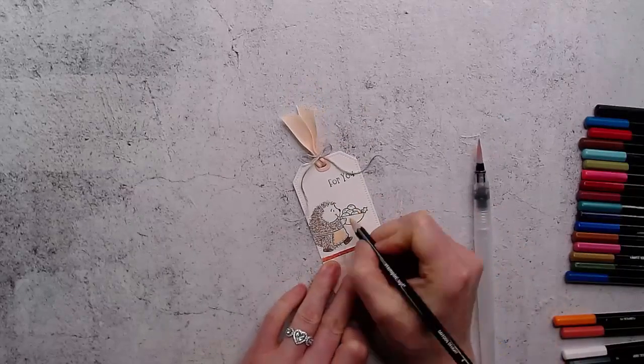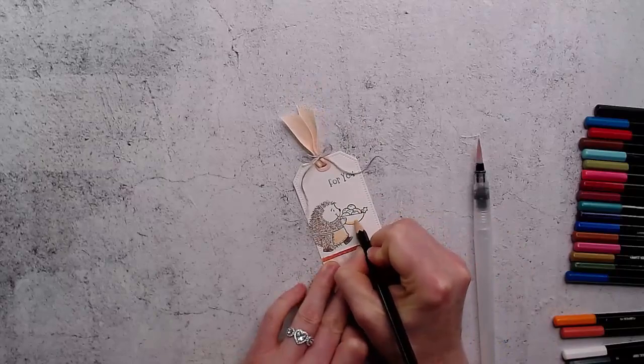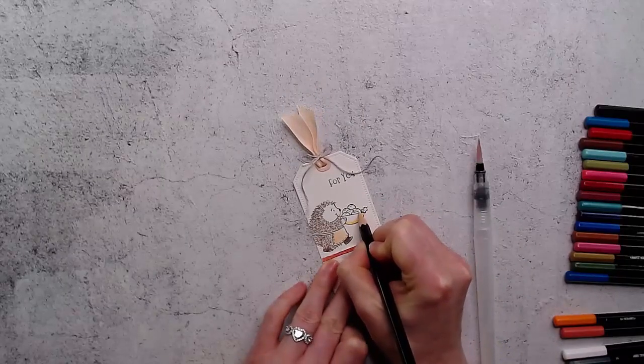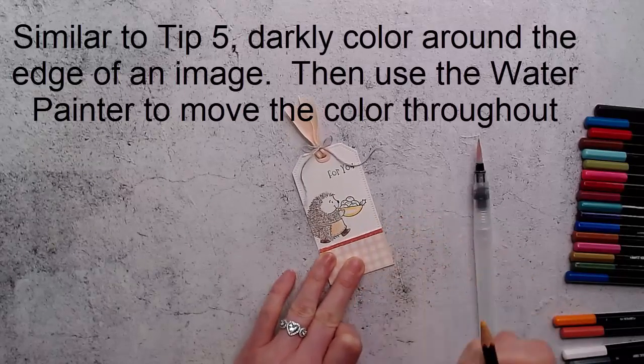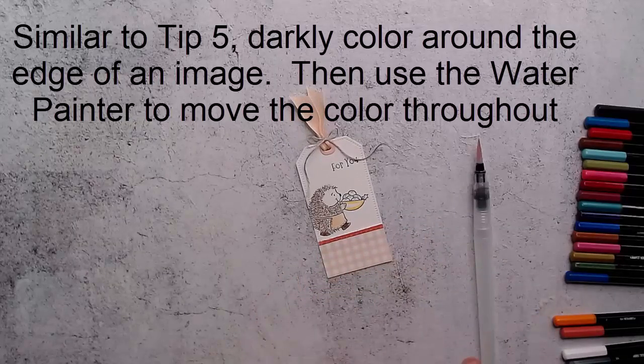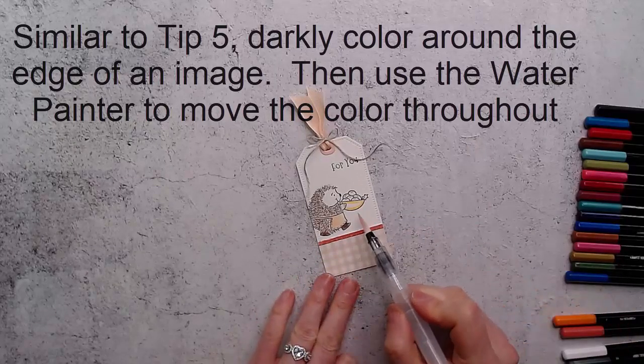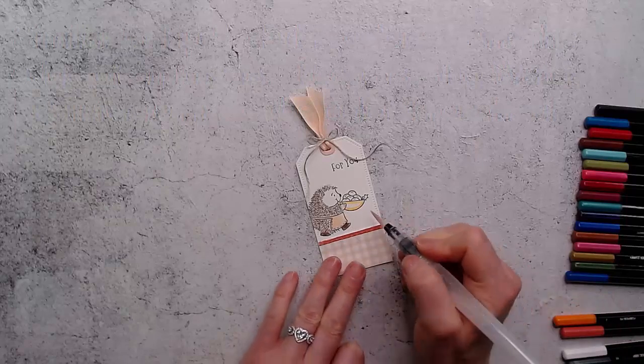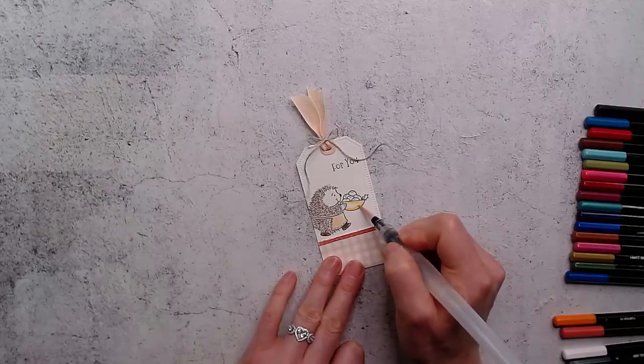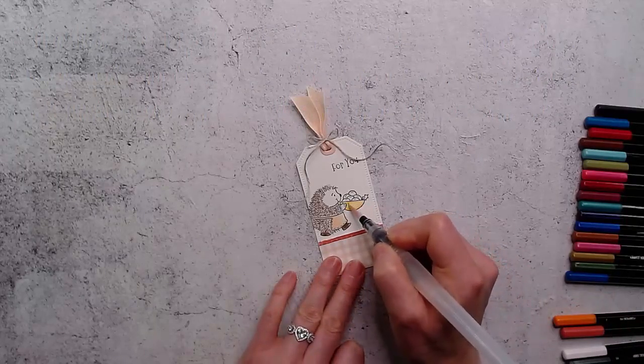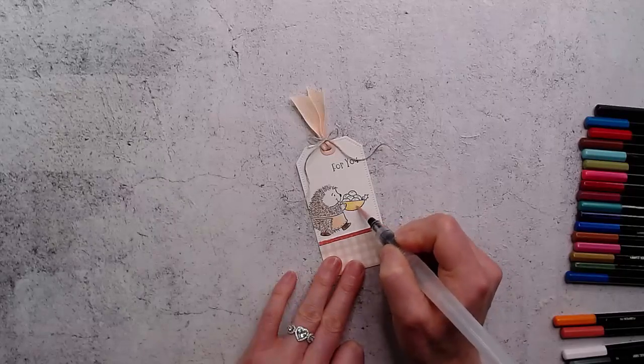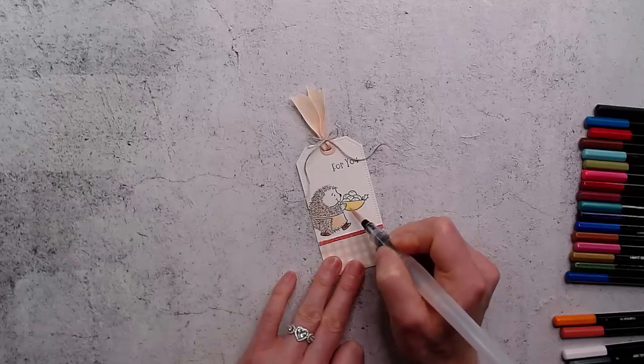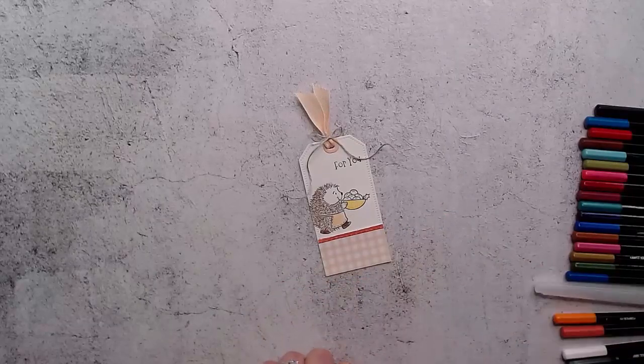I'm going to color in, I'm going to go around the edge. This is another way you can use it, you can just go around the edge of your image like that. Hopefully you can see that, it's very tiny on my screen. So you've got a dark edge and then you'll just take your coloring medium and just bring that pencil in through the middle so it's kind of going to be darker around the edge and lighter in through the middle.